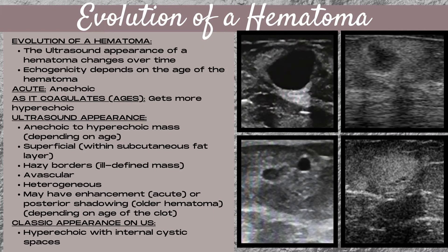The ultrasound appearance of a hematoma changes over time, and the echogenicity depends on the age of the hematoma. When a hematoma is acute in the very early stages, it's anechoic. As the hematoma coagulates over time or ages, it gets more hyperechoic. It's a superficial mass within the subcutaneous fat layer with hazy borders, ill-defined margins, is avascular, and heterogeneous. In the acute phase you may see enhancement; with an older hematoma you may see posterior shadowing. The classic appearance is a hyperechoic mass with internal cystic spaces.